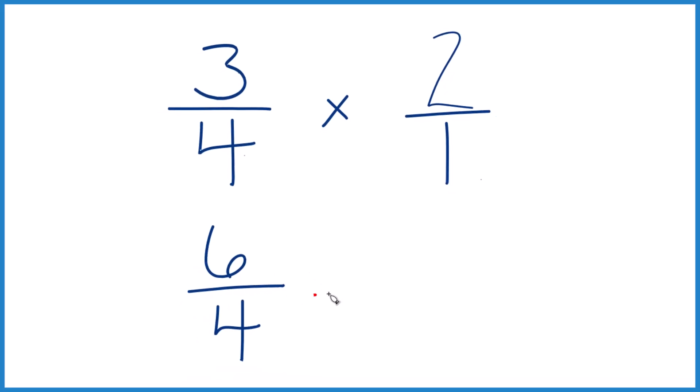These are even numbers, so let's simplify this. We could divide both by two. Six divided by two is three. Four divided by two is just two. So, we have three over two.